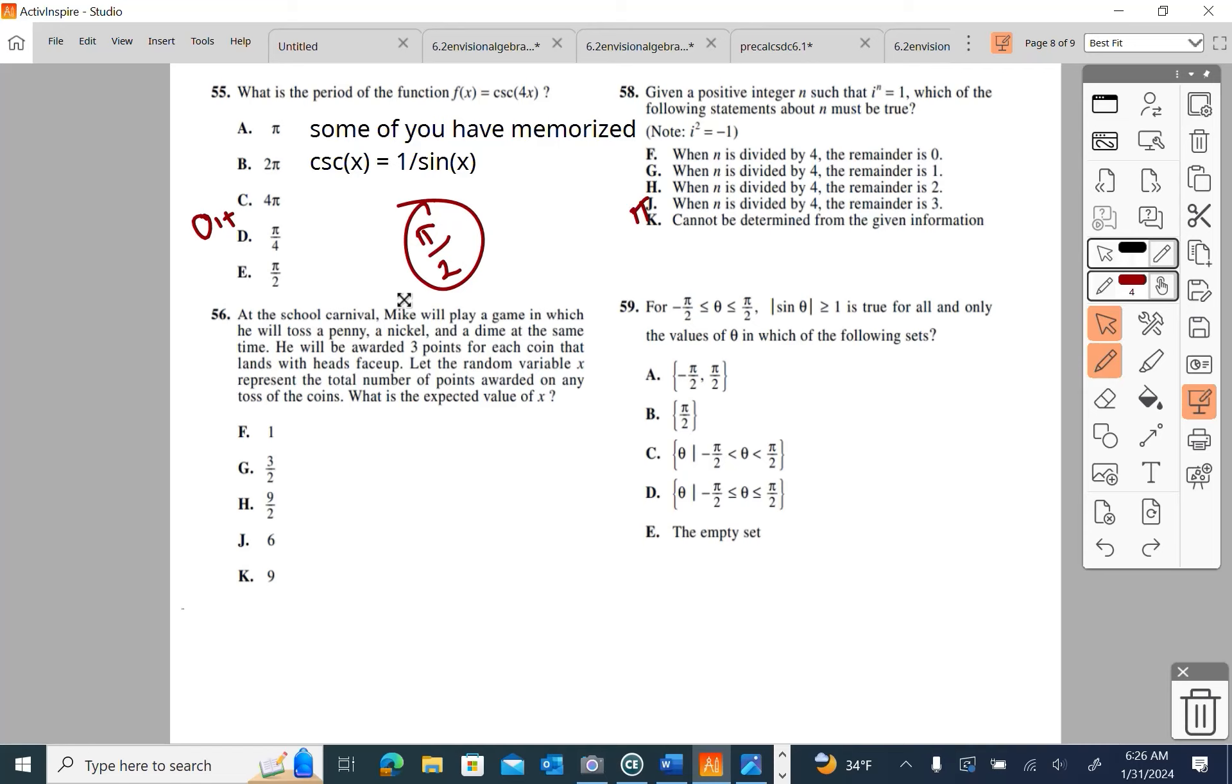At the school carnival, Mike will play a game in which he will toss a penny, a nickel, and a dime at the same time. He will be awarded three points for each coin that lands with the heads face up. Let the random variable x represent the total number of points awarded on any toss of the coins. What is the expected value of x? So, when I glance at this, I think the answer is probably nine halves. What I'm going to do is I'm going to write out what we call a solution or a sample space. So, if I throw a penny, it could be a head or it could be a tail. If I throw a nickel, it could be a head or it could be a tail. There could be lots of variations of this, but this is what we expect. 50-50 whether you win three points or not.